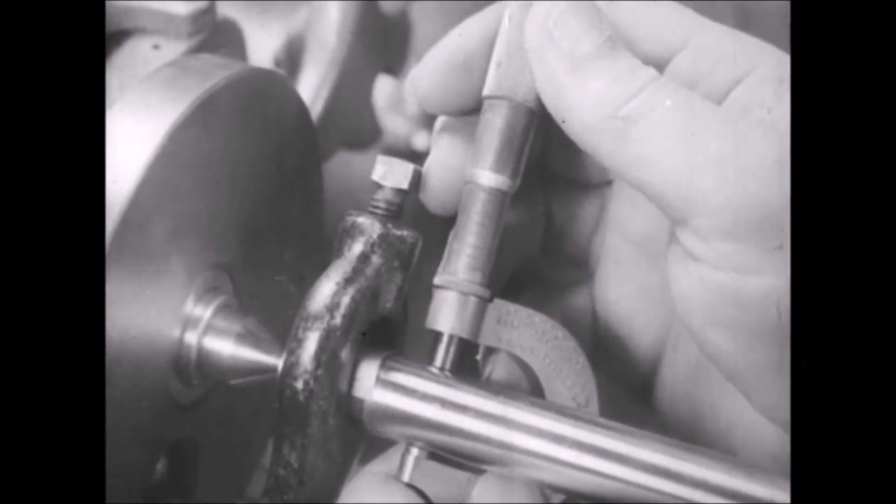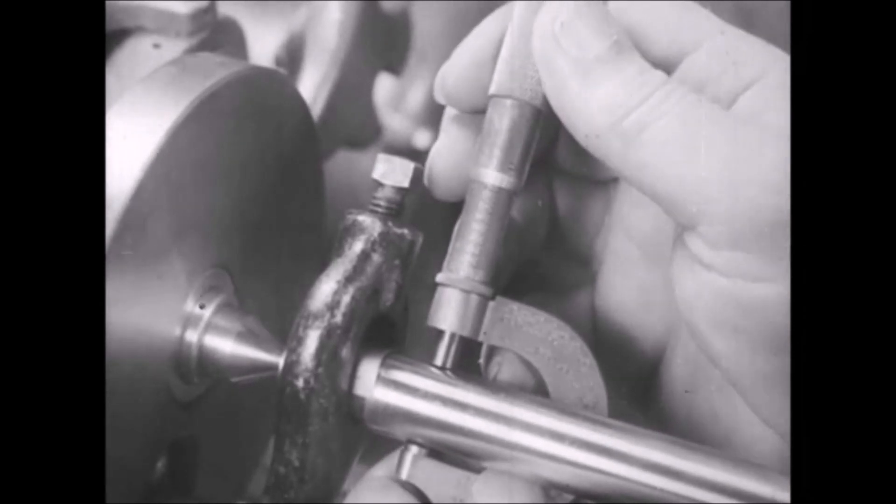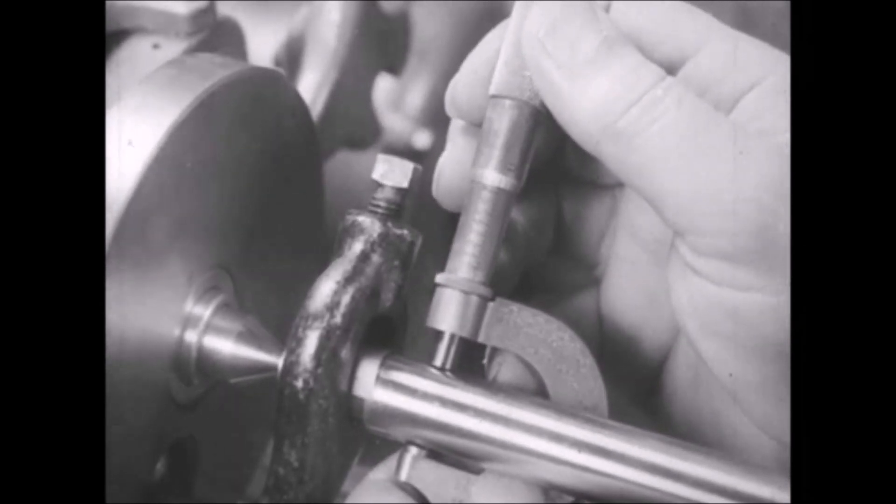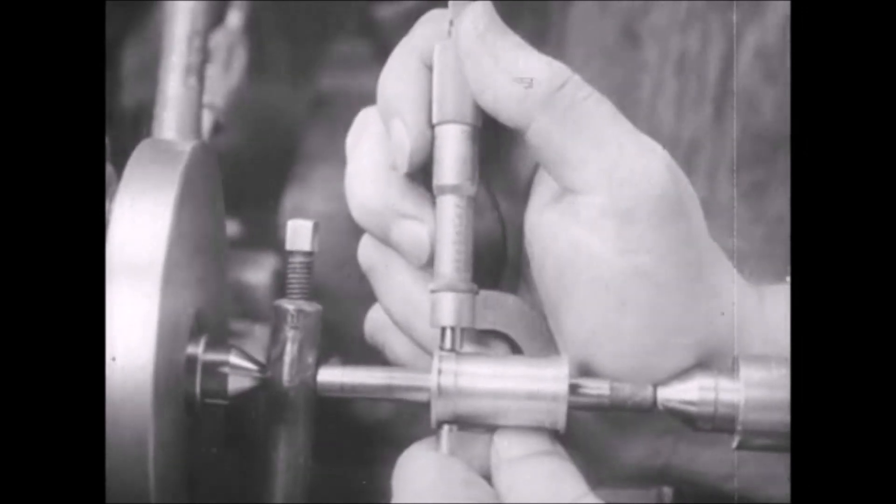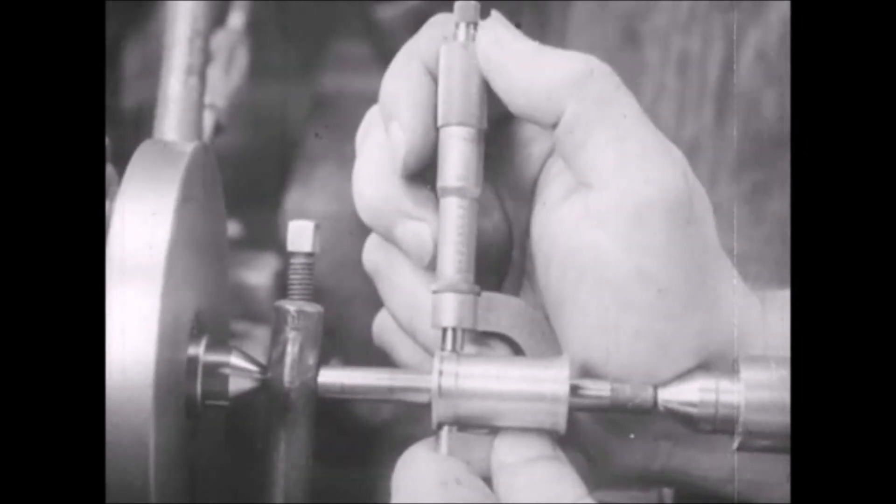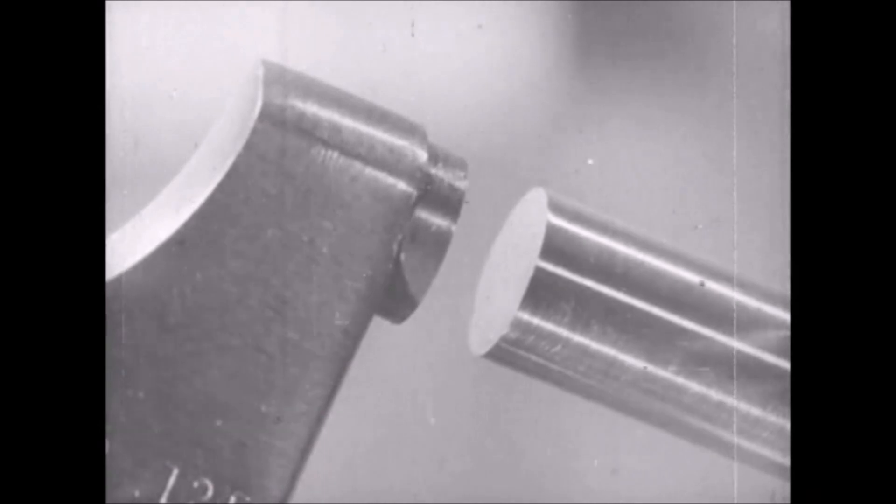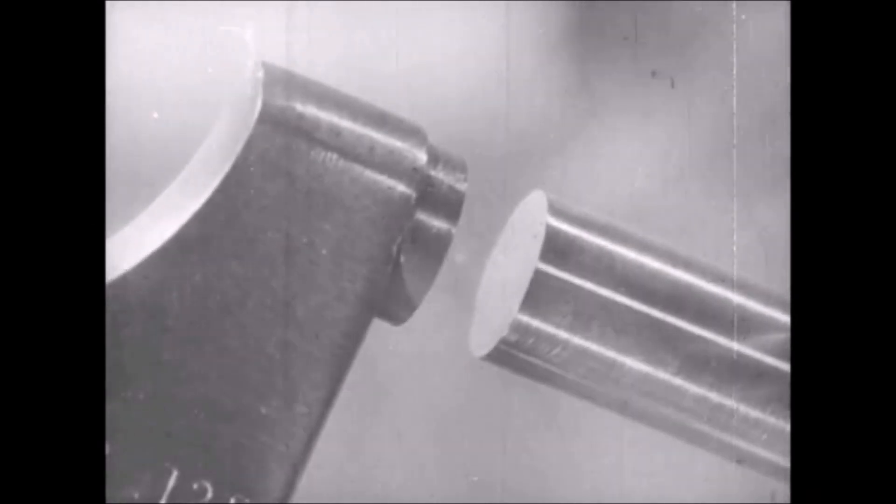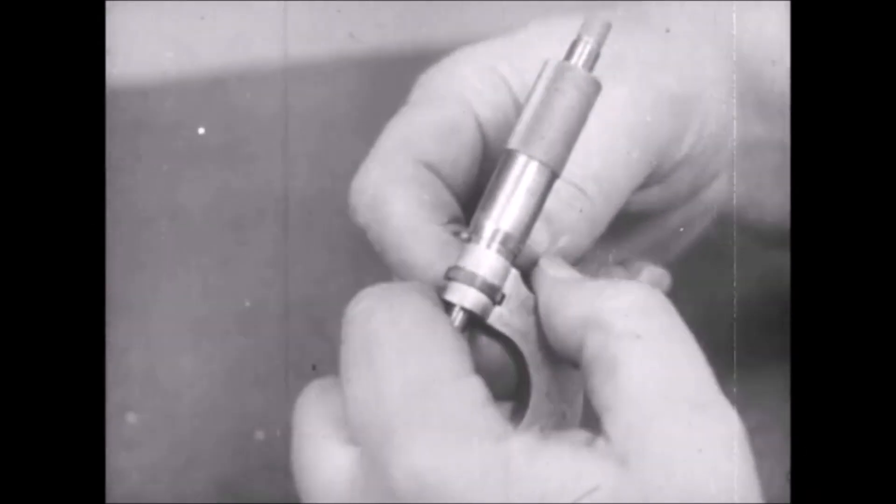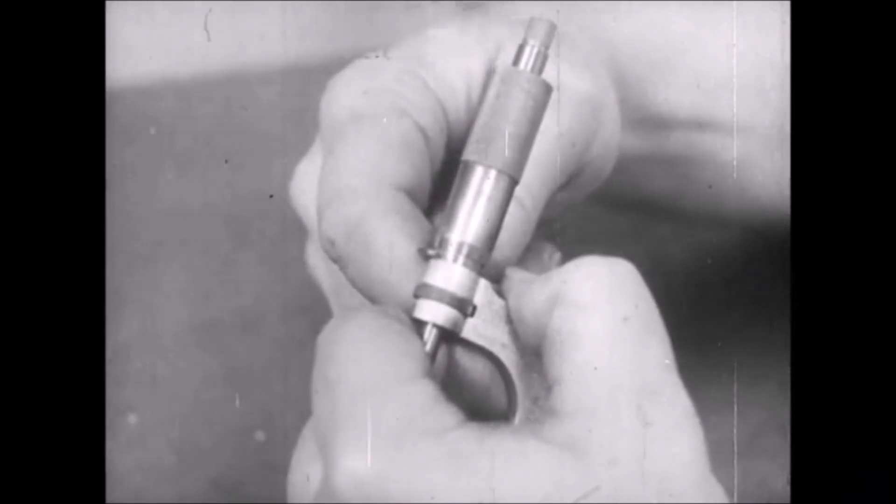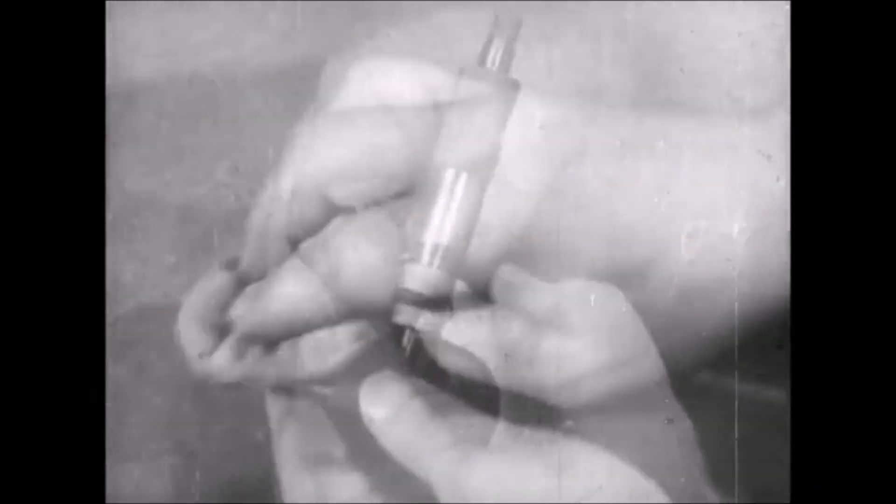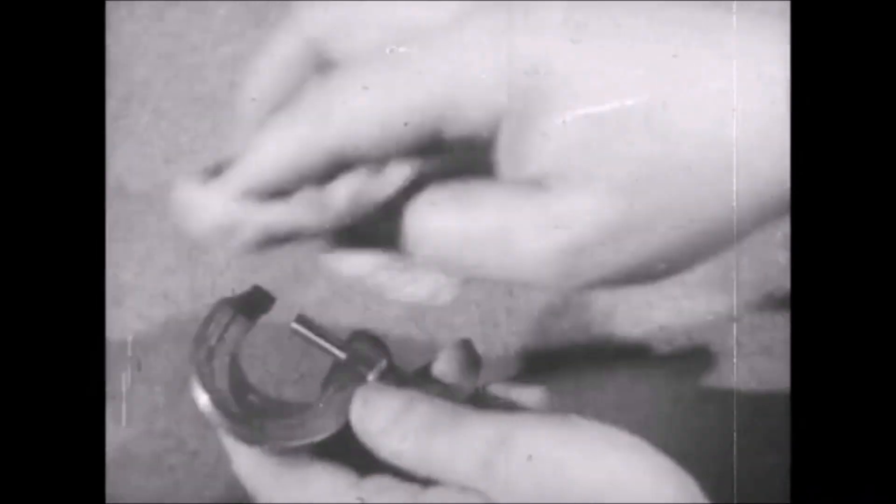All micrometers are precision tools, and the good operator takes pride in his ability to use them properly. He knows that the thimble should not turn too freely or too tightly, and that the anvil and spindle must be kept separated to prevent corrosion, and that they must be kept in adjustment to assure accurate readings. The good operator gives them this care, oiling them to prevent rust and corrosion, and keeping them in a protected place.